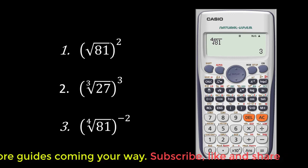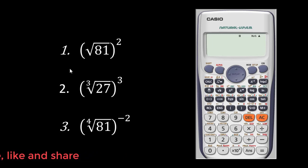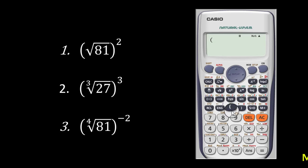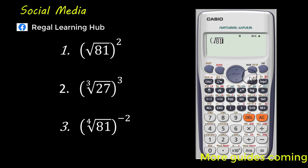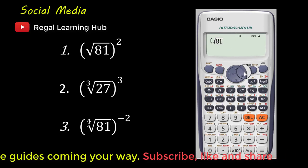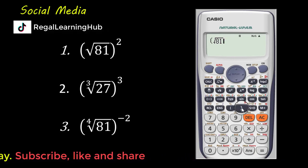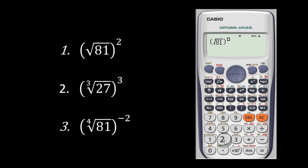Let's go further and look at the combination of radicals and powers. Our first example: we have the square root of 81, squared. First, open the brackets by pressing this button, then press the radical key and type in 81. Scroll to the right to get out of the radical, then close the bracket, then square it — either press the square key or press the power key and type in 2. Press equal to, and the answer is 81.